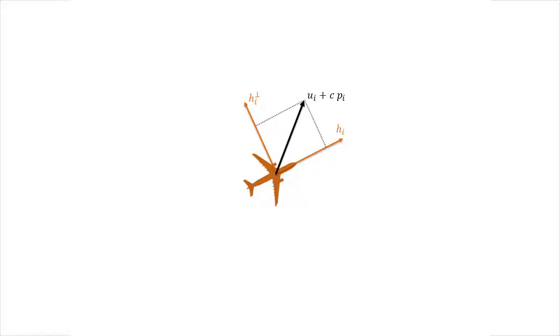is projected onto the heading direction and perpendicular heading direction of each UAV. The length of the projected vector on the heading direction determines the speed, and the length of the projection on the perpendicular direction determines the rate of